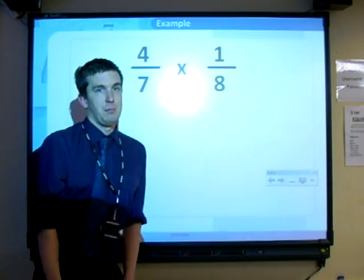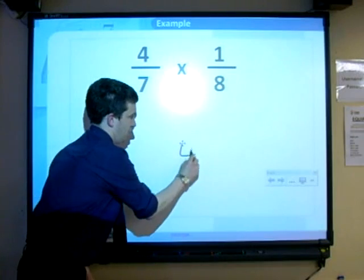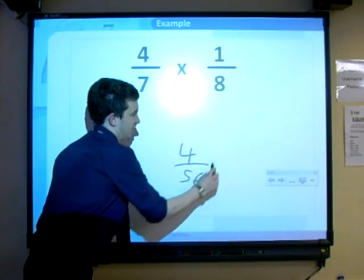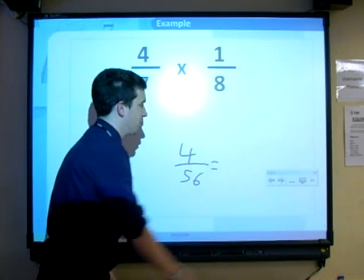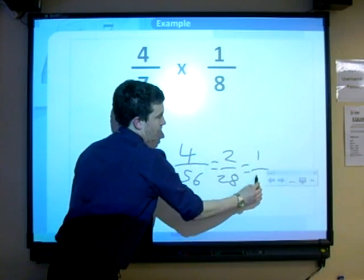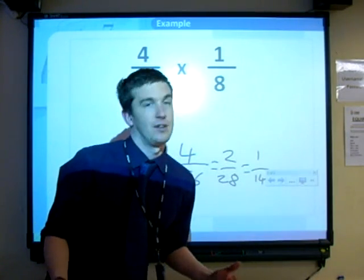Another example. Again, it's the same thing. 4 times 1, 4. 7 times 8, 56. Simplify it. 2 goes into both, 2 over 28. 2 goes into both, 1 over 14. We're laughing. Yeah, easy.